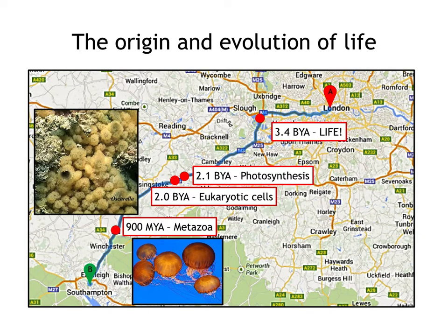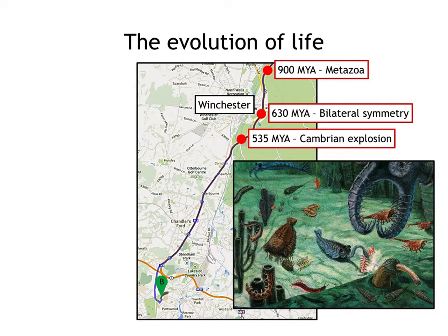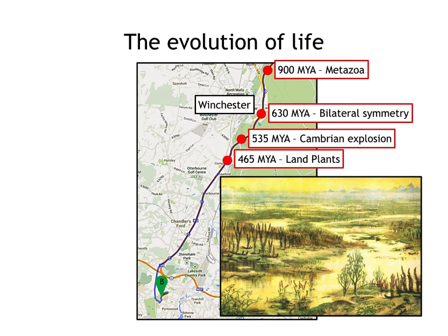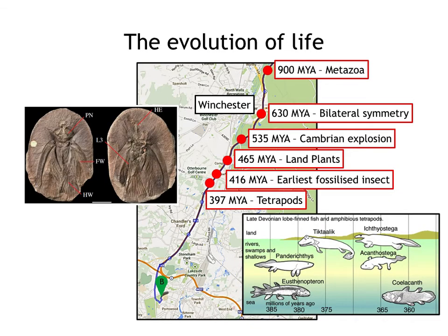Just north of Winchester, around 900 million years ago according to molecular clock estimates, we have the emergence of metazoa. We have to come south of Winchester, to within 12 miles of my desk, before we get the Cambrian explosion and the emergence of all the animal phyla we recognise today. Further south at roughly Otterbourne Golf Course we get the emergence of land plants, enabling soil formation and the invasion of land by other organisms. At 416 million years we have the first fossilised insects, and at about 397 million years, around 2–3 miles north of Chandler's Ford, we have our first tetrapods — our first animals with four limbs.